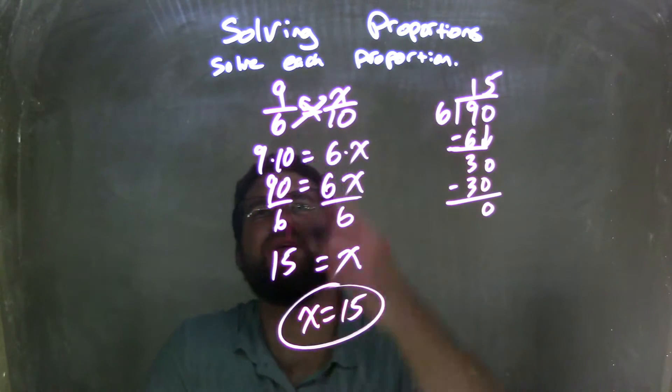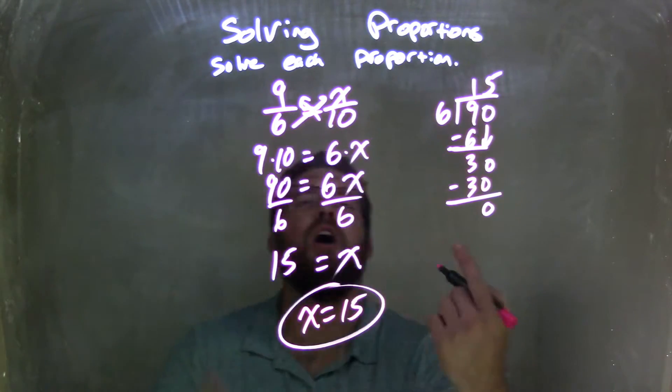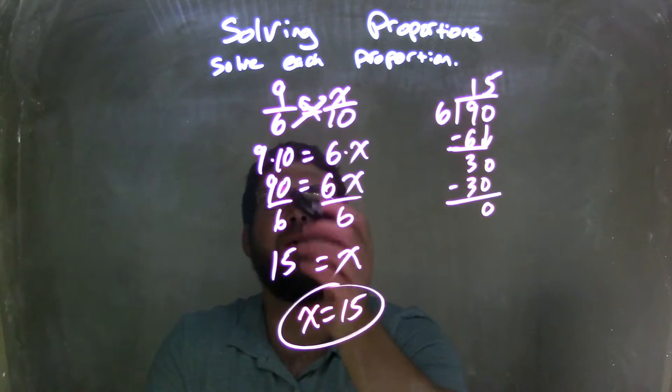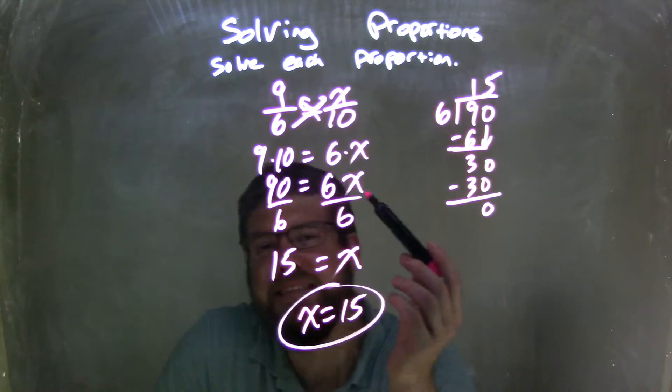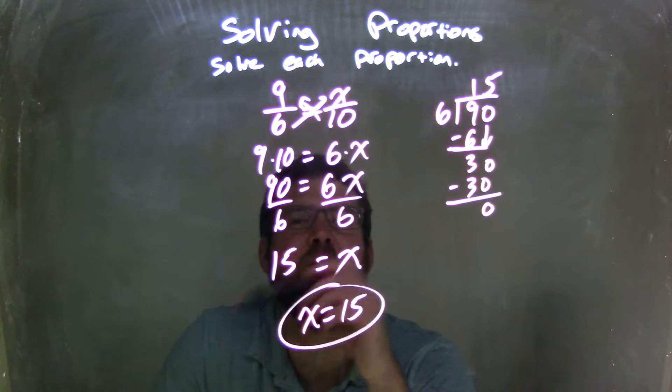So, let's recap here. We have 9 over 6 equals x over 10. We cross-multiply to get 9 times 10, which is 90, and 6 times x, which is 6x. I then divide by 6 on both sides to get x by itself, leaving me with x on the right and whatever 90 divided by 6 is on the left.